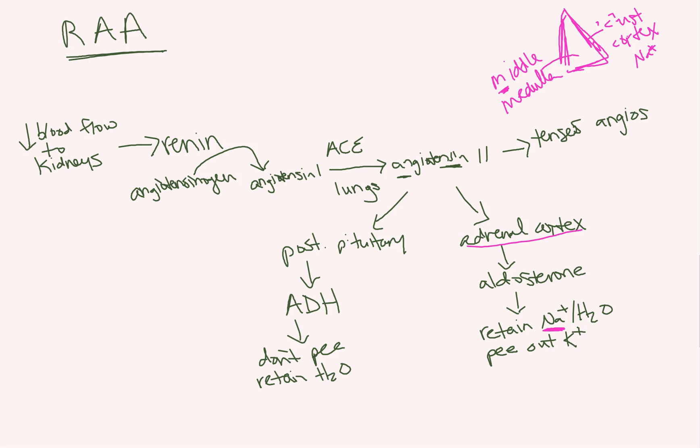Your posterior pituitary, how you remember what comes from that is that ADH and oxytocin come from your posterior pituitary. And everything else comes from your anterior pituitary. So everything, especially things that have tropin in them or releasing hormone in them, all come from your anterior pituitary. So like adrenocorticotropic hormone comes from your anterior pituitary. Gonadotropin releasing hormone, thyrotropin releasing hormone, follicle stimulating hormone. All that comes from your anterior pituitary.